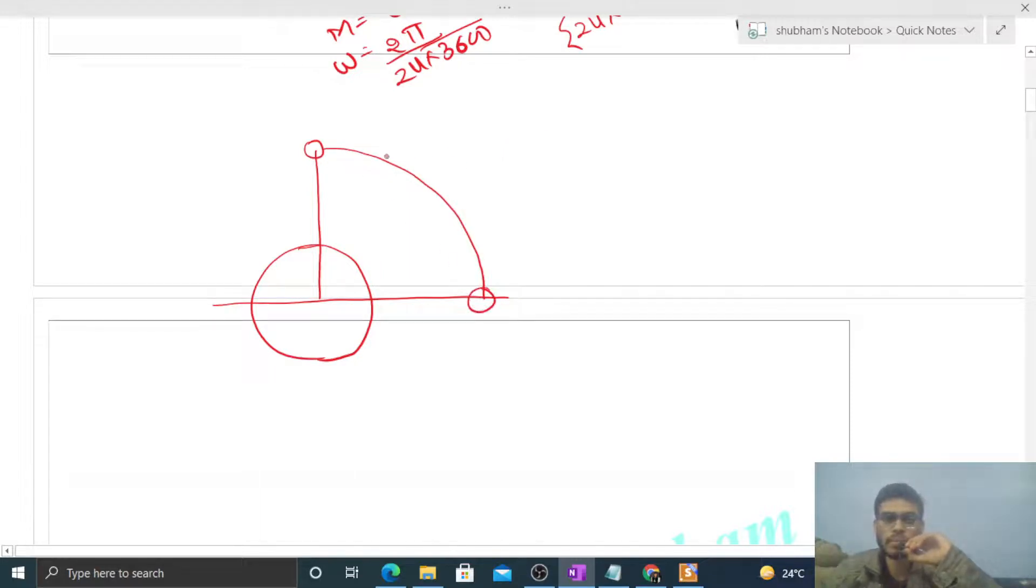So how much time will it take? Let's say the time period of the satellite is capital T. Then to travel this distance, how much time will it take? T by 4, because it is 1/4th of the circular path. This satellite is moving with a constant angular speed, so that's why the time taken will be 1/4th of the time period, that is T by 4.